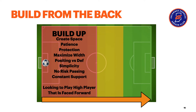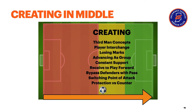We need constant support. Ideally when we build from the back, we want to look to play the highest player possible that's faced forward. As we move into the middle third, we're going to look to start creating a little bit more — combining with three-player movements, having rotations and interchanges between players, losing our individual marks with that Velcro or elusive movement, and having constant support and advancing as a group.